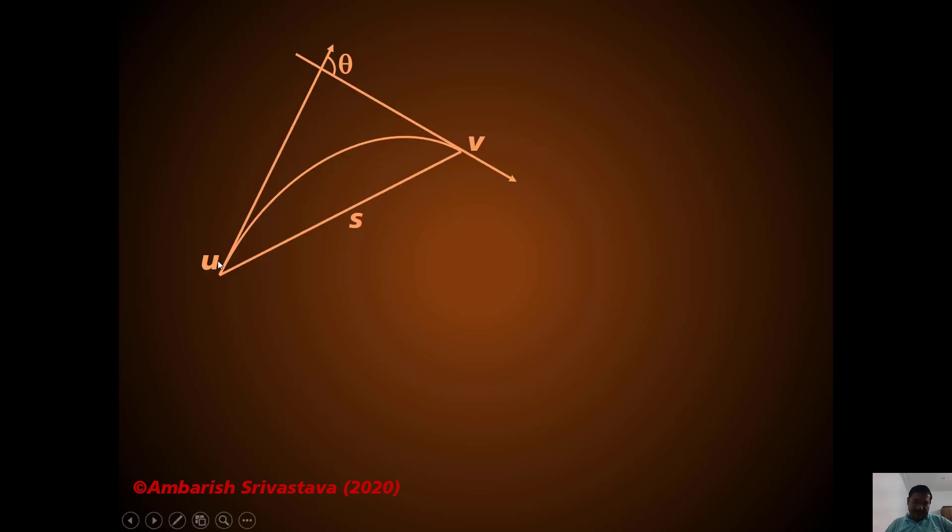So now let me present to you the solution. Let us say this is the required optimal projectile path. So launching speed is U and landing speed is V. And let's say S is the displacement of the projectile. And let's say the angle between the launching velocity and the landing velocity, let's say that angle is theta.